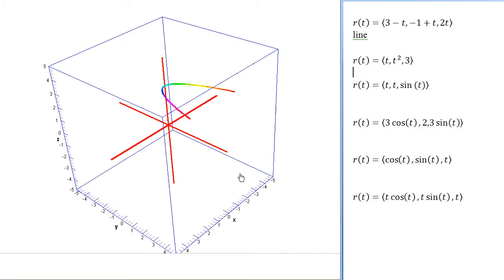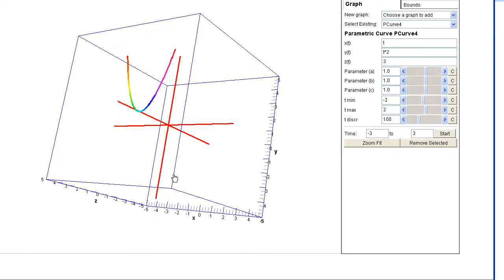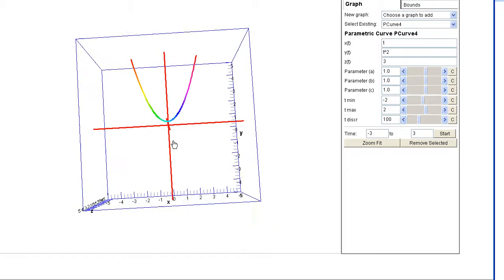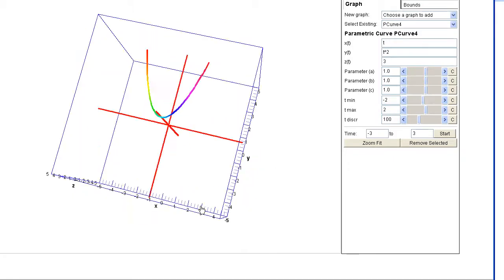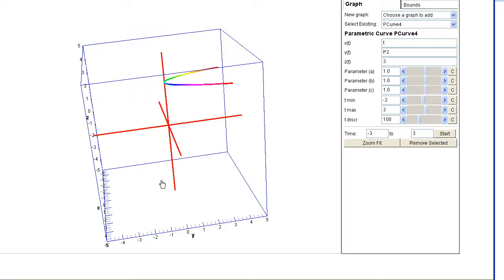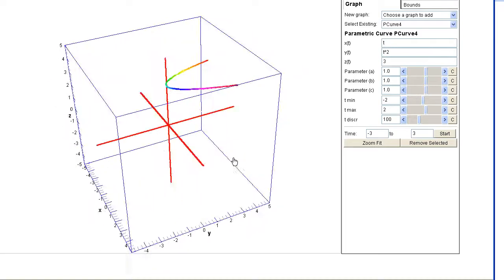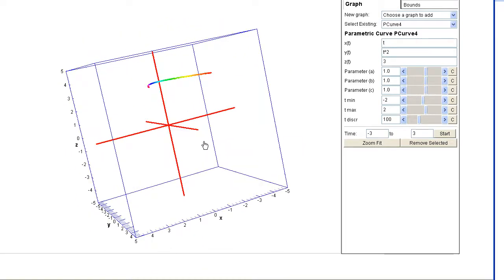So if we look at this graph, so we're going to come over here now. Notice that if we turn the graph, we can see that y is indeed equal to x squared. And we're getting that parabola at a constant value of z.